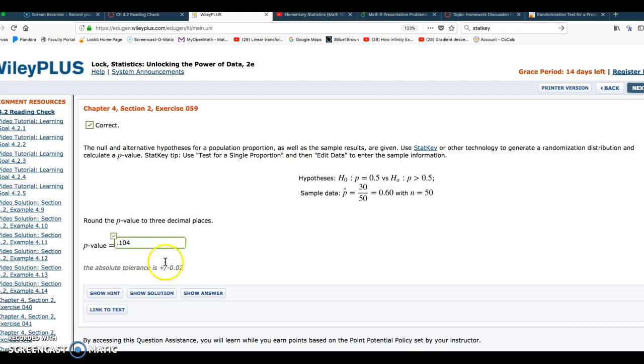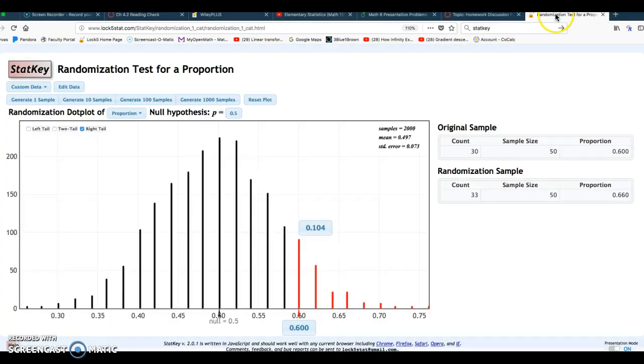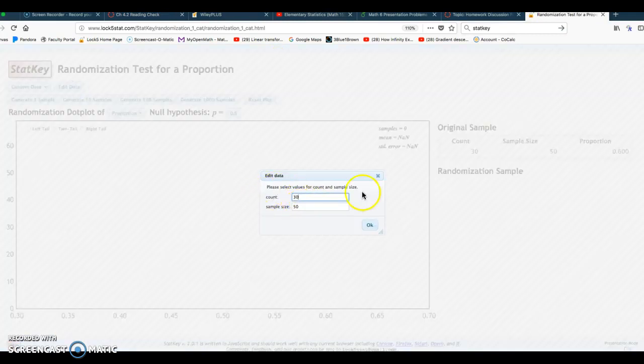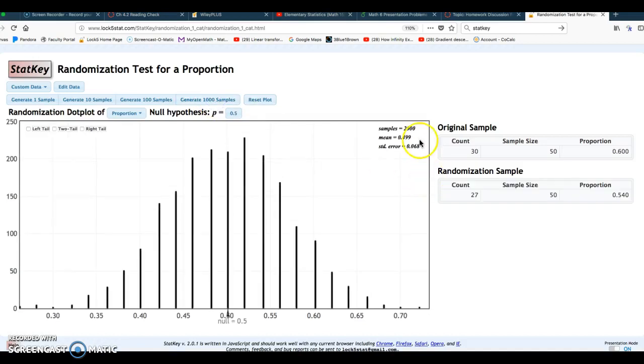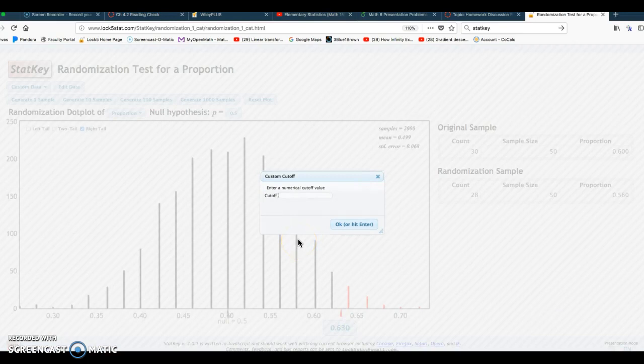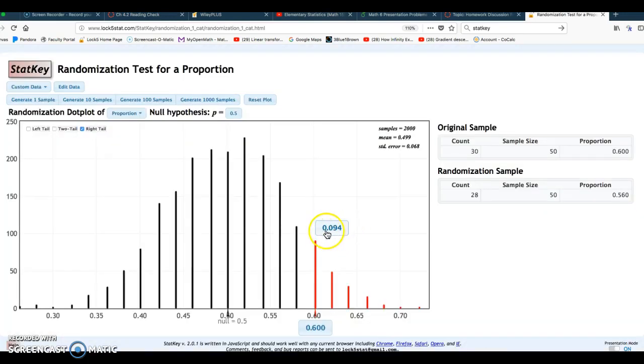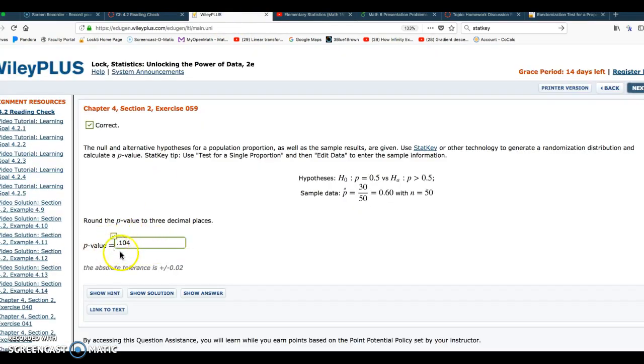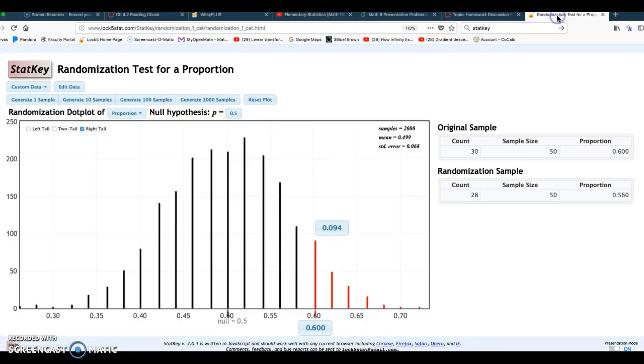And one other thing, if I were to run this again, this is not going to be a fixed number. This is not absolutely 10.4%, 0.104. Because if I were to go back over here and reset plot, make sure edit data is still 30 out of 50. Generate 2 more thousand, click on right tail, bottom, change that to 0.6. I got 0.094. So I actually did this problem before making this video, and I had 0.096. And I answered it in the problem, got it correct. So you're not going to have the exact same number as your friends. Or if you run through the simulation again, this p-value is not fixed. But there should be a tolerance, there's a tolerance of 0.02, so it should be able to take a range. Just make sure to create at least 2,000 samples and change that bottom entry to your sample statistic. In this example exercise, it was 0.6.